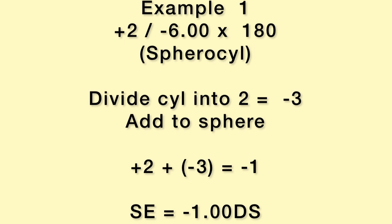So now divide the cylinder into two. The cylinder here is -6.00, so when dividing by two I'll get -3. Then I add to the sphere, which is +2. So +2 plus -3, I'll get -1.